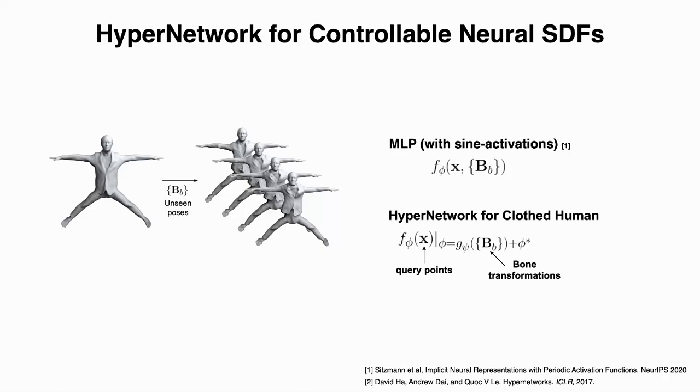In this work, instead of conditioning f function on the bone transformations, we use a hypernetwork j_psi to predict the parameters of the SDF function f_phi from the input poses. So, the f function itself only conditioned on the input query points and its parameters are predicted by hypernetwork j which takes poses as inputs. Overall, we can obtain a pose-dependent neural SDF.